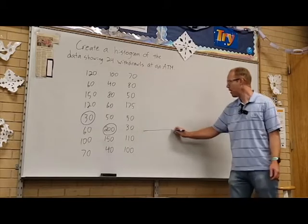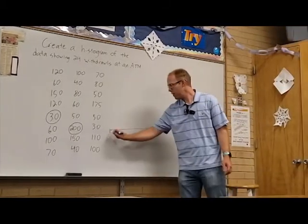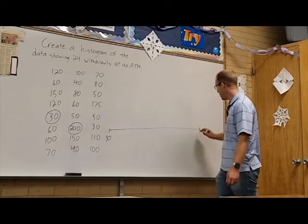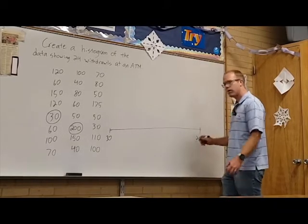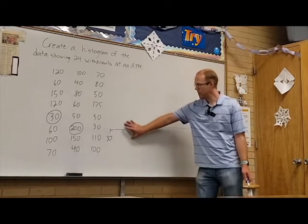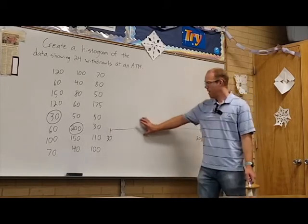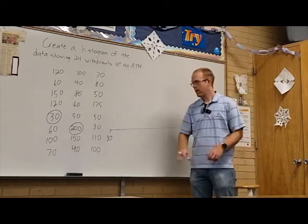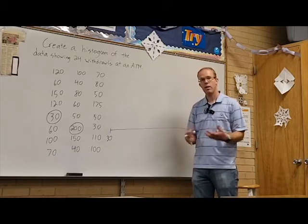On my number line, I'm going to make sure that I go down to 30, and all the way up to 200. Now the next part is probably the most difficult about creating histograms, it's breaking this up into intervals, and it is your choice with how you do that. I could go by ones, I could go by fives, I could go by tens.